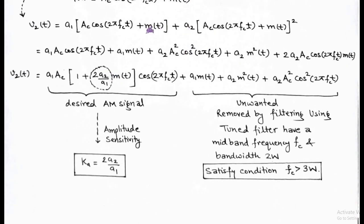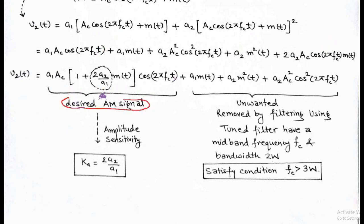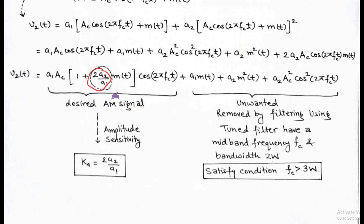Now, opening the bracket and solving using the (a + b)² formula, we get terms involving a1·Ac·cos(2π·fc·t), a2·m(t), a1·m(t), and a2·m²(t). Combining the first and fourth terms, we get v2 = a1·Ac·[1 + (2a2/a1)·m(t)]·cos(2π·fc·t), and the remaining terms are a1·m(t) + a2·m²(t) + a2·Ac²·cos²(2π·fc·t).